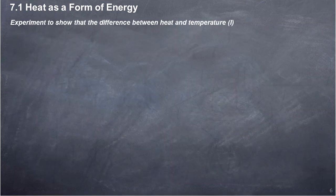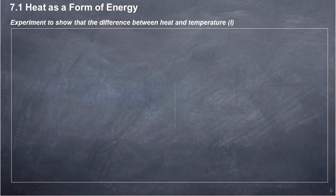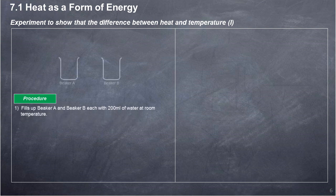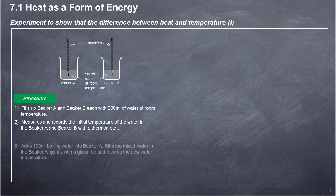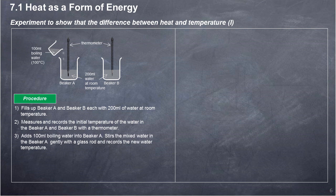Experiment to show the difference between heat and temperature. Procedure: Fill Beaker A and Beaker B each with 200 ml of water at room temperature. Measure and record the initial temperature of the water in both beakers with a thermometer. Add 100 ml of boiling water into Beaker A. Stir the mixed water in Beaker A gently with a glass rod and record the new water temperature.